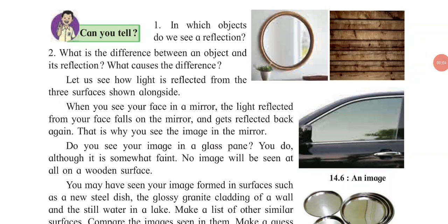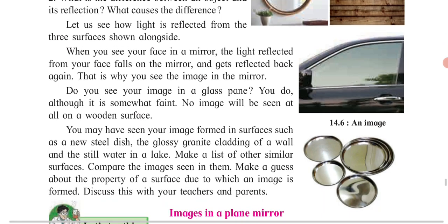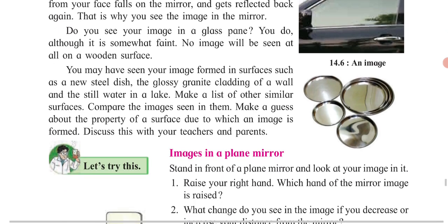Welcome. Today we have started our new lesson, Lesson Number 14, that is Light. We have seen some concepts from it — the reflection of light and how we can see an object. We can see an object when the reflected rays fall on our eyes. You have seen your image formed in surfaces such as a steel dish, the glossy granite cladding of a wall, and water in a lake.